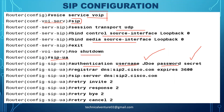To add a registrar server, use 'registrar dns sip2.cisco.com expires 3600'. This sets the domain name of your registrar server with a 3600-second expiry. For the SIP server, use 'sip-server dns sip2.cisco.com' — you can also enter an IP address or FQDN here.